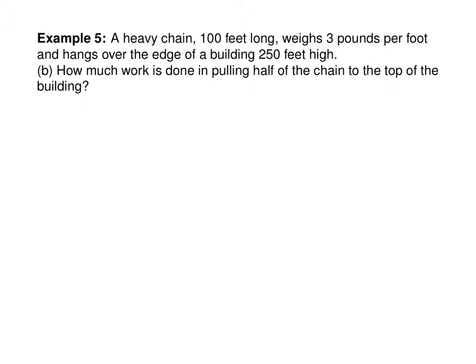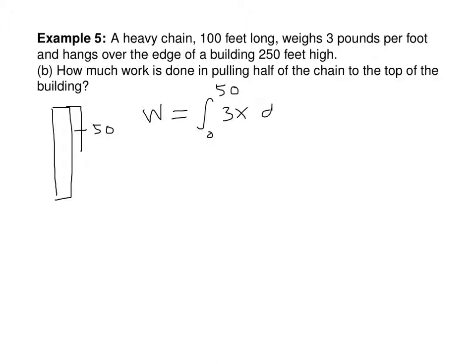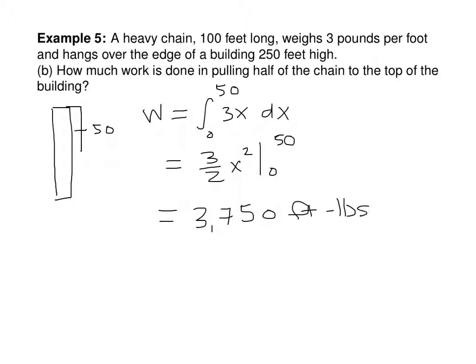How much work is done in pulling only half of the chain to the top? In that case, x sub i's will only go to 50, so we integrate from 0 to 50 of 3x dx, which is 3/2 x squared evaluated from 0 to 50, giving 3,750 foot-pounds — significantly less, because the remaining chain would have to travel a greater distance, resulting in more work.